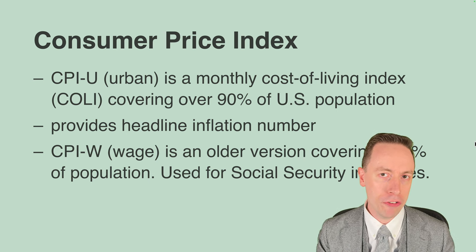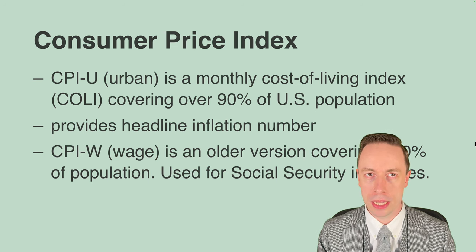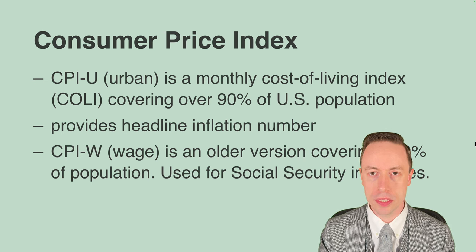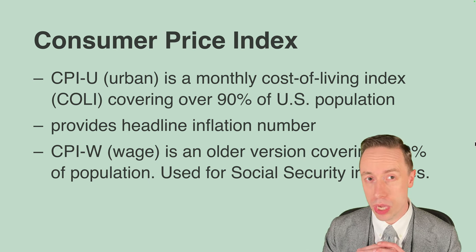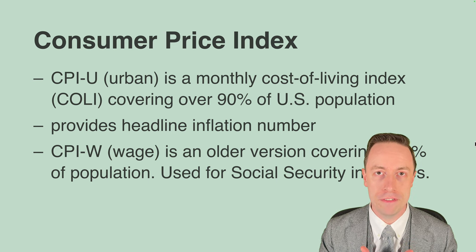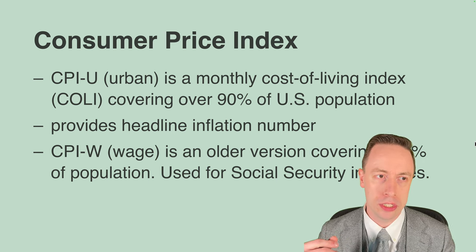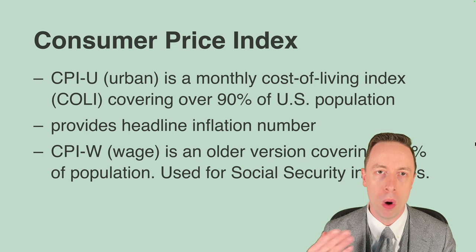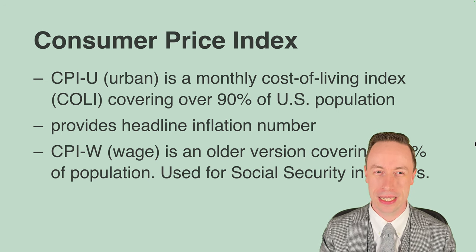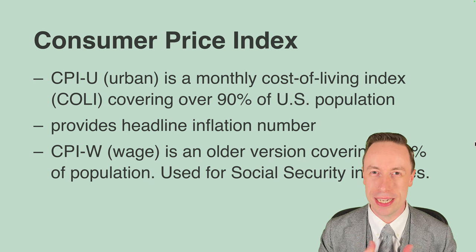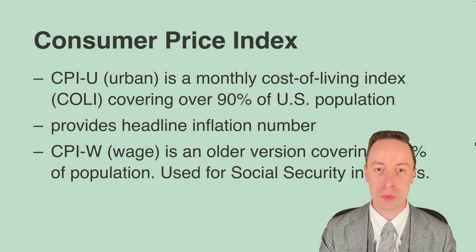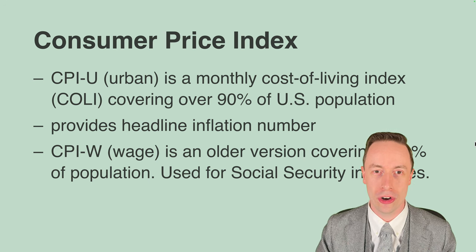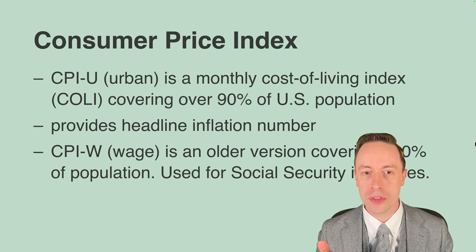The consumer price index, as opposed to GDP where we look at total production, tries to capture the experience of an individual consumer. The dream is to construct a cost of living index (COLE) that tracks one-for-one how a consumer's cost of living changes. There are some practical limits — we can't capture how much sunshine people experience — but when it comes to prices sold in stores and online, that's something we can track. This produces the headline inflation number, currently 3.1 percent year over year.